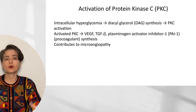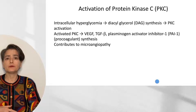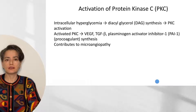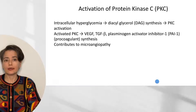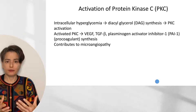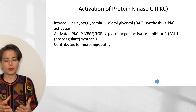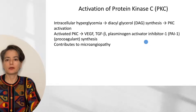The second mechanism is activation of protein kinase C. With intracellular hyperglycemia, the cell begins making diacylglycerol, which activates protein kinase C. When protein kinase C is activated, it stimulates synthesis of vascular endothelial growth factor, transforming growth factor beta, and plasminogen activator inhibitor 1 (PAI-1). These interact across a variety of pathways — it gets complicated quickly — but they contribute to microangiopathy. Notably, PAI-1 is procoagulant, contributing to the development of atherosclerosis.